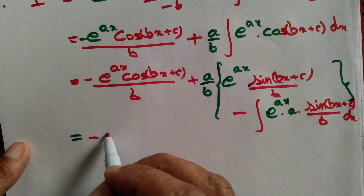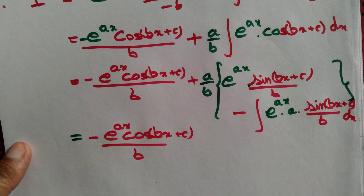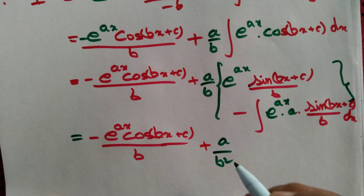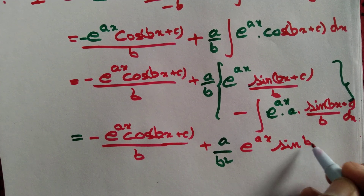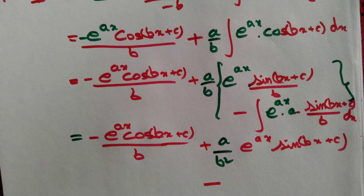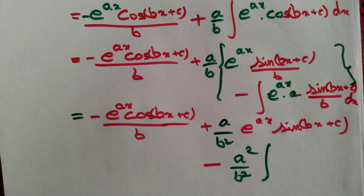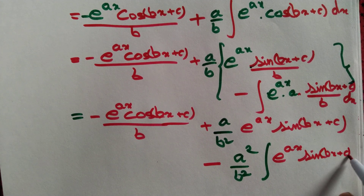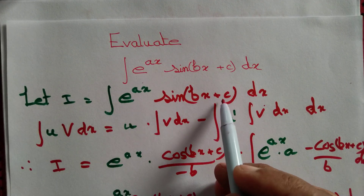So this equals minus e to the power ax times cos bx plus c divided by b, plus a by b squared times e to the power ax times sine bx plus c. And for the remaining integral term you get minus a squared by b squared times integral of e to the power ax times sine bx plus c dx. But that integral is exactly what we started with — it's equal to i.